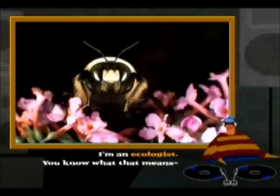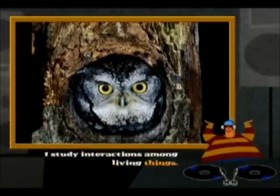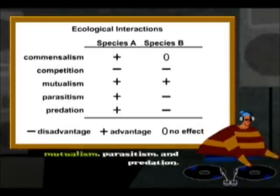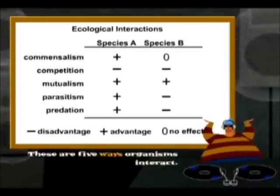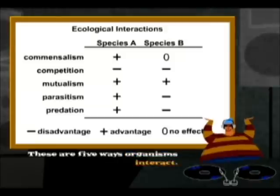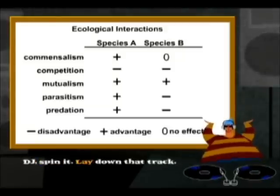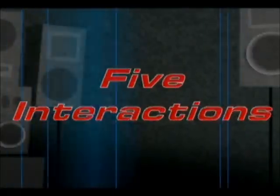Well, I'm an ecologist, you know what that means. I study interactions among living things. Commensalisms and competition. Mutualism, parasitism, and predation. These are five ways organisms interact. DJ, spin it!